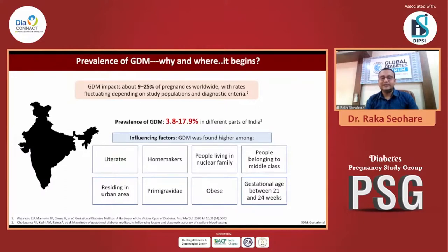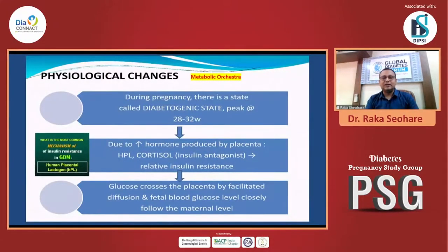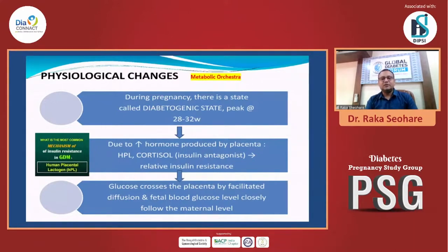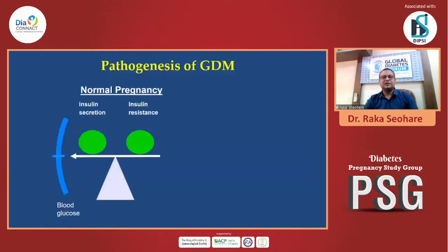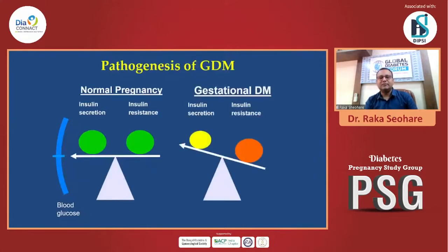The set point is that there is a difference in the balancing act of the body between hormones. Life is totally a balancing act, and these are the physiological changes in the metabolic orchestra, because pregnancy is called a diabetogenic state. Its peak is around 28 to 32 weeks, and the hormonal milieu changes — there is an increase in HPL, that is human placental lactogen, along with cortisol and other insulin antagonists, which further pushes insulin resistance in the body.